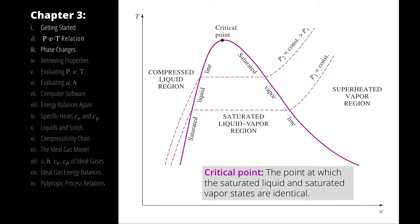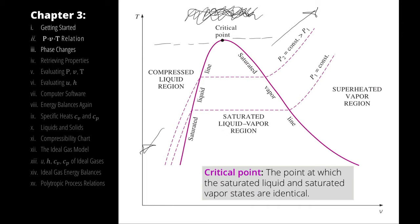Everything to the left of the dome is a compressed liquid, everything to the right is a superheated vapor, and everything under the dome is a saturated liquid-vapor mixture. If we are directly on the left side of the dome, we have a saturated liquid; on the right side, a saturated vapor. The very top of the dome is the critical point for that substance — the point at which the saturated liquid and saturated vapor states are identical. Everything above the critical point has a blurry region between compressed liquid and superheated vapor. A useful mnemonic: a line of constant pressure on a temperature vs. specific volume (TV) diagram goes up and to the right — turn the TV up.